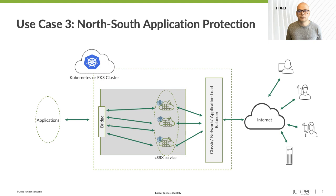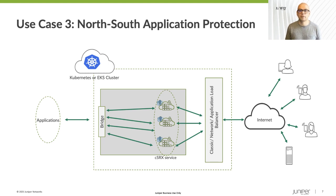This is very similar to the previous use case — only the location of the applications being protected changes. The benefits of this use case are leveraging the load balancers in AWS to scale up and scale down firewall instances almost instantly based on user-defined CPU limits. Advantages of a Kubernetes environment are leveraged in the protection of virtual or hardware-based application workloads, whether in an EKS cluster on AWS or on-premises.